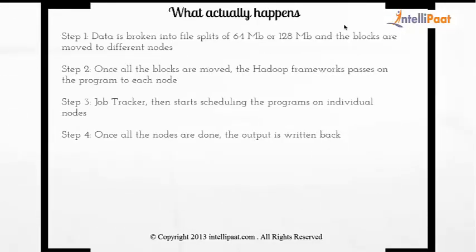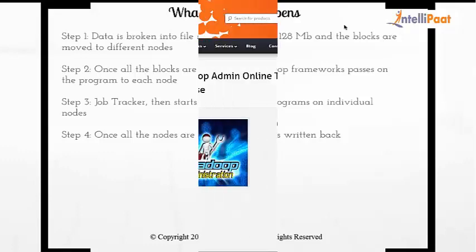Here's what actually happens: if you have 640 MB of data, it is broken into input splits of 64 MB to 128 MB, and those blocks are moved to different nodes. Once all the blocks are in place, the Hadoop framework passes the program to each node. The Job Tracker then schedules the programs on individual nodes, and once all nodes are done, the output is returned. That's how Hadoop typically works.